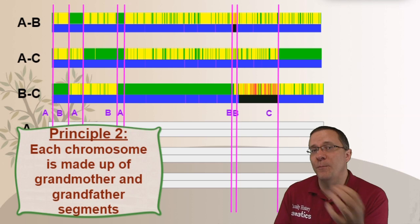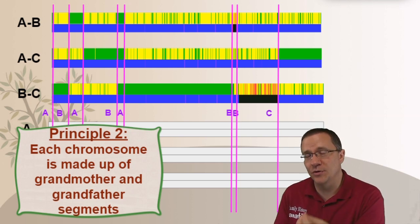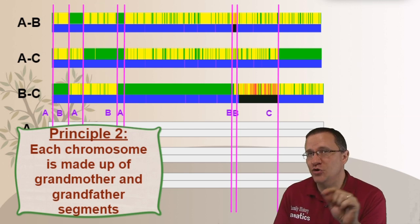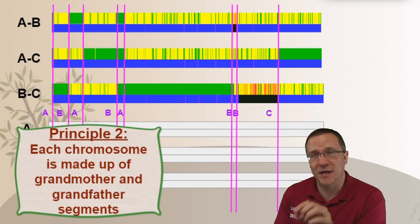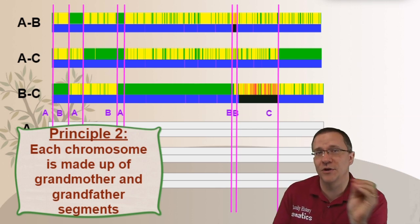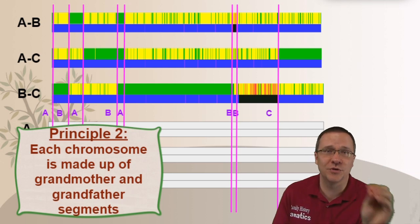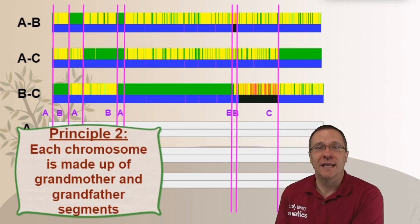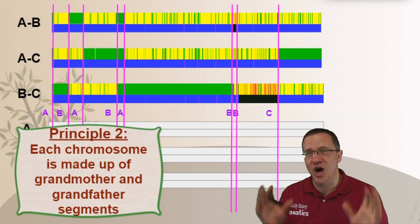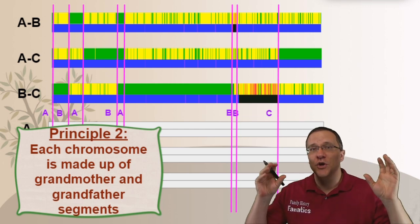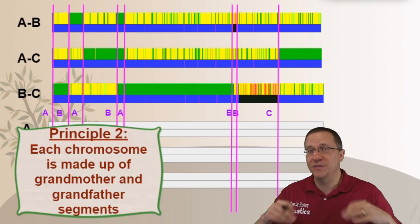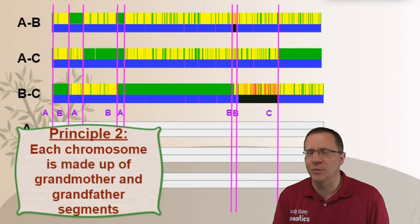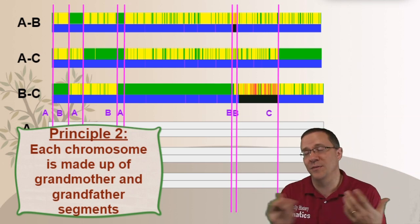Principle number two: each chromosome — not chromosome pair, but each chromosome — is made up of grandmother and grandfather segments. On your paternal chromosome it represents your paternal grandfather and your paternal grandmother, and on your maternal chromosome it represents your maternal grandfather and your maternal grandmother. Because the paternal and maternal chromosomes are not related to each other and don't interact, your grandparent segments have to stay separate. At this point we still don't know which bar represents the maternal side and which represents the paternal side.